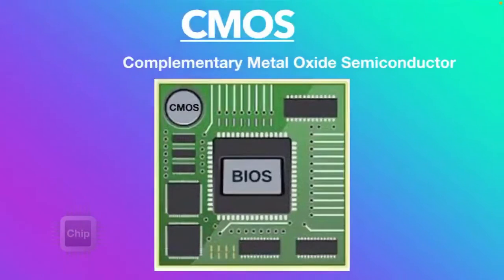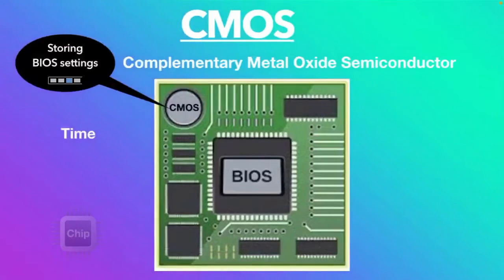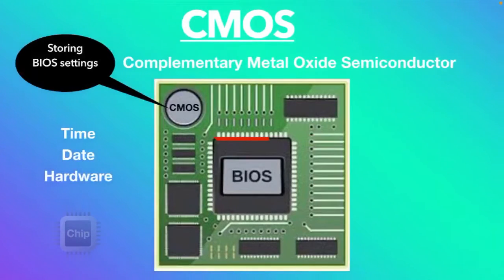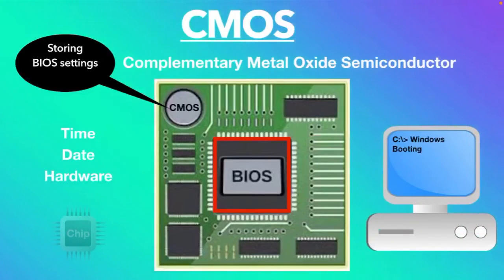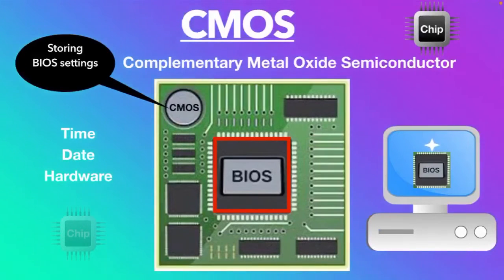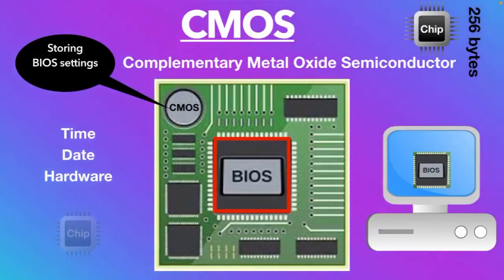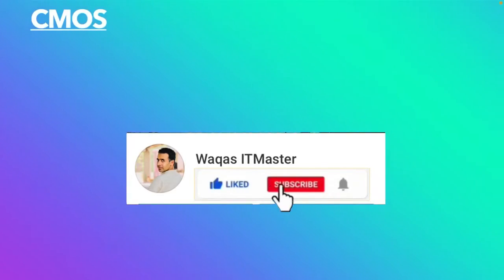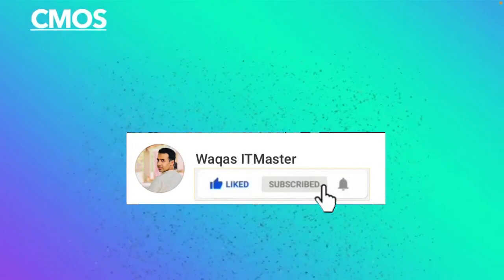CMOS stores BIOS settings such as system time, date, and hardware settings that are needed by the BIOS to start the computer. When the computer first boots up, BIOS pulls the information from the CMOS chip to understand the hardware settings such as date, time, and anything else stored in it. This chip stores as little as 256 bytes of information.